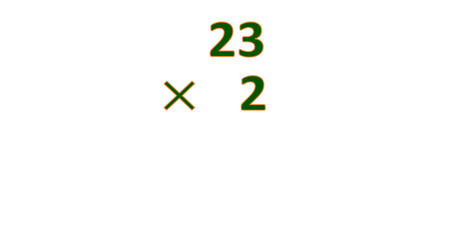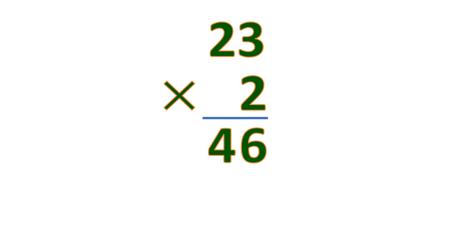So let's have an example. We have 23 times 2 — a two-digit number multiplied by a one-digit number. Whenever we multiply numbers, we multiply the multiplicand, the one on top, by each digit of the multiplier, which is the one at the bottom. In this case it's only one digit, so we multiply just once. So 3 times 2 gives us 6, and 2 times 2 is 4. So 23 times 2 is 46.